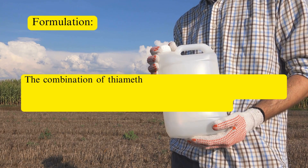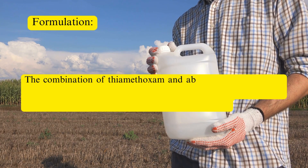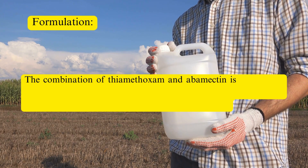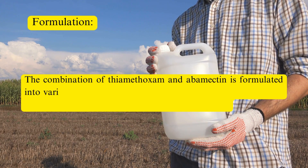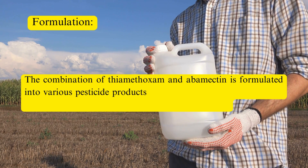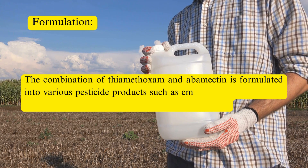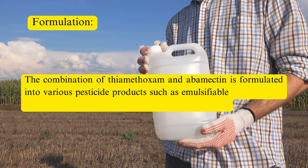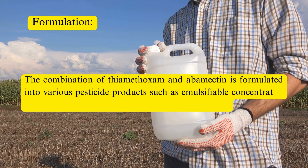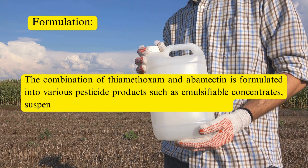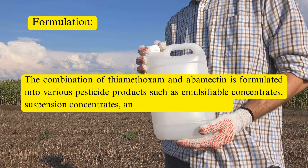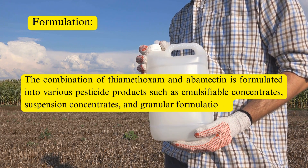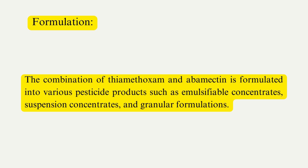Formulation. The combination of thiamethoxam and abamectin is formulated into various pesticide products, such as emulsifiable concentrates, suspension concentrates, and granular formulations, often with inert ingredients and adjuvants.